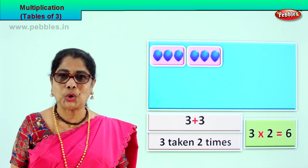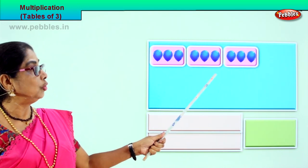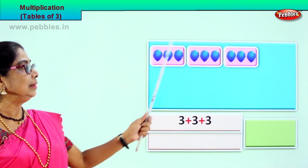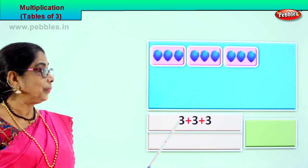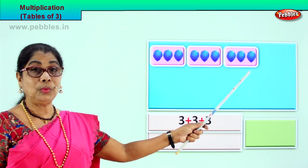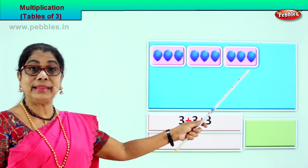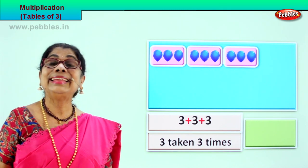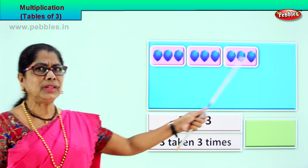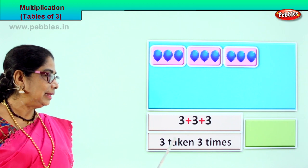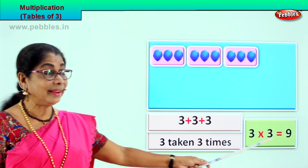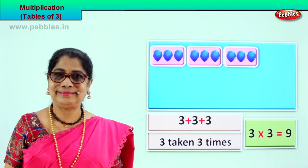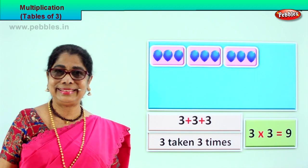Shall we take another grouping of three? Look. One group of three, another group of three, and one more group of three. Three taken three times. Addition — multiplication, repeated addition. So we add three three times: three plus three is six, six plus three is nine. Three taken three times — three into three is nine. Three threes are nine.